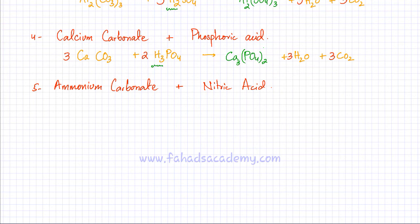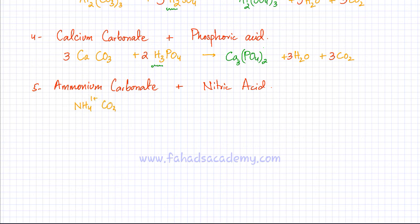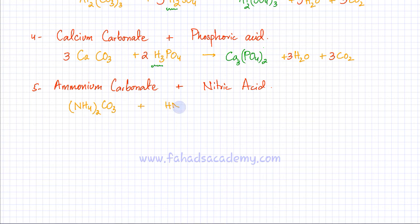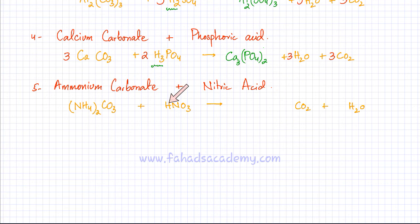Now the last example: ammonium carbonate reacting with nitric acid. Ammonium is NH₄ with a charge of 1+, and carbonate is CO₃ with a charge of 2−. Using the crisscross method, the formula is (NH₄)₂CO₃. It's reacting with nitric acid, HNO₃. The products are a salt, carbon dioxide, and water. To find the salt, neutralize the acid — get rid of H and substitute with the ammonium ion.